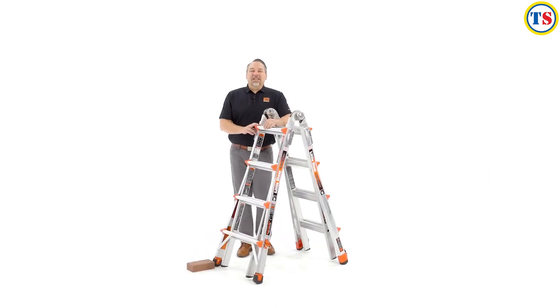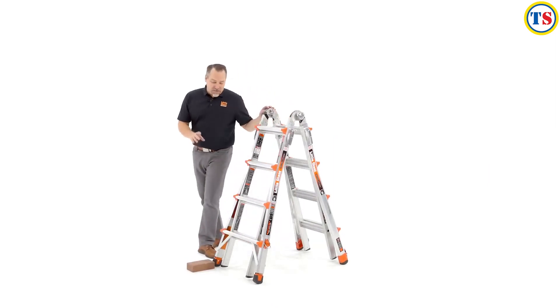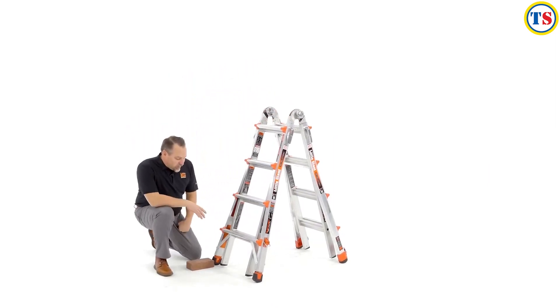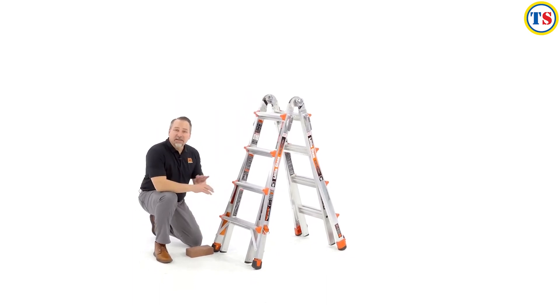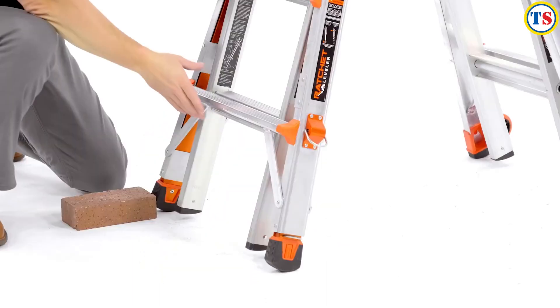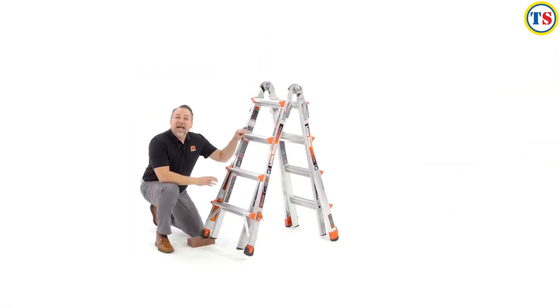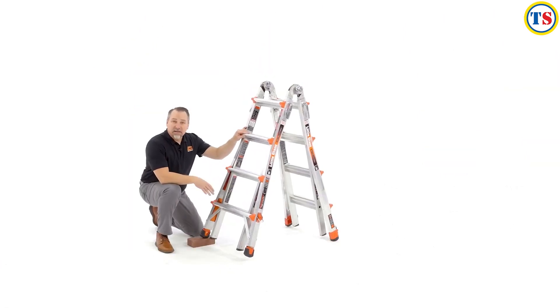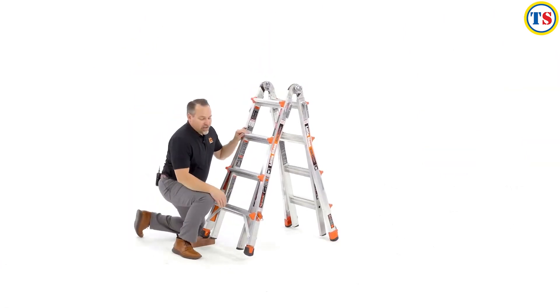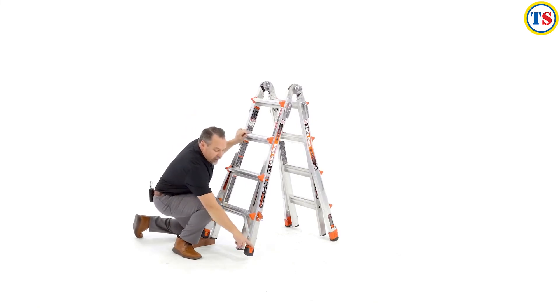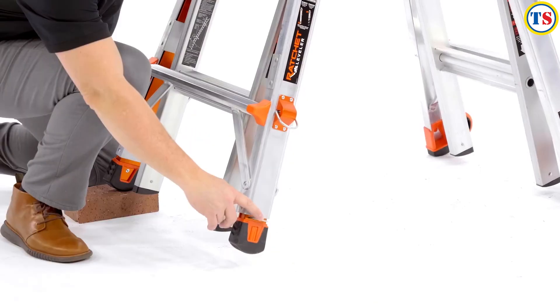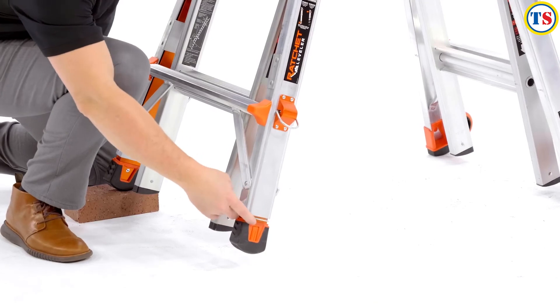If your Revolution Ladder came equipped with ratchet levelers, we want to demonstrate those. We're going to use this brick to simulate uneven ground. Now it could be a little bit like this brick or it could be a lot. You wouldn't want to use any ladder on uneven ground. Just wouldn't be safe. So having a ratchet leveler, you can depress with your foot or your hand right here on this metal tab.